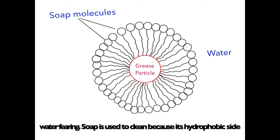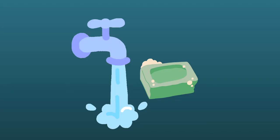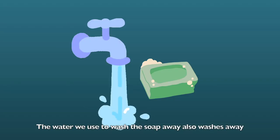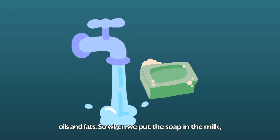Soap is used to clean because its hydrophobic side attracts the oils, while its hydrophilic side bonds with water. The water we use to wash the soap away also washes the oils and fats.